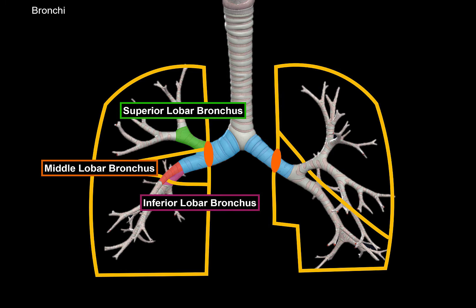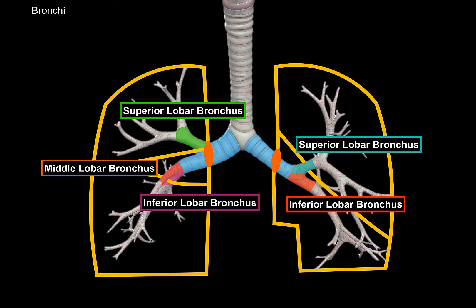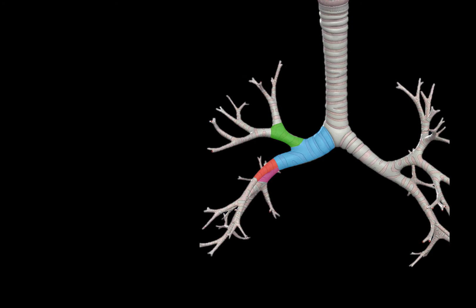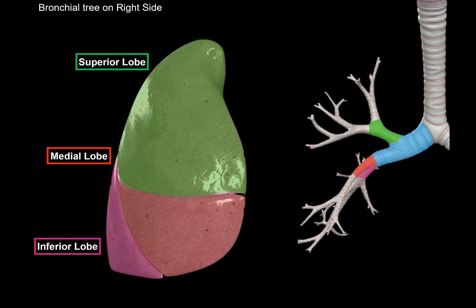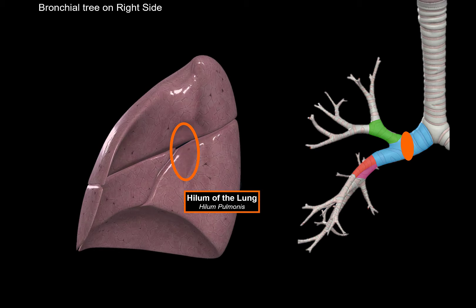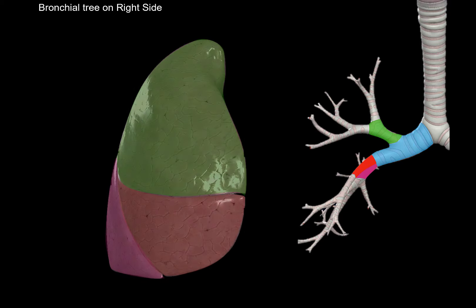The left one will branch off as the superior and inferior lobar bronchus. Now let's do the full bronchial tree on the right side. Here is the right lung — it has a superior lobe, middle lobe, and inferior lobe. If you look at it from this direction, you'll be able to see the hilum of the lung, which is the place where the bronchi enters the lung and branches off to each of these lobes as the superior, middle, and inferior lobar bronchi.